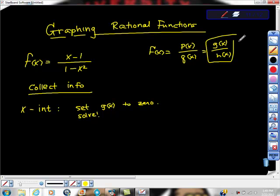Yeah, make sure that when you do that, it doesn't also set this to 0. Because if you set g of x to 0, and you plug in that value, and it also makes h of x go to 0, you have what? You have a removable discontinuity, right? But you have a hole in the function.